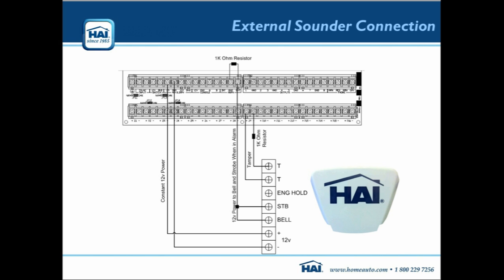The bell box itself offers a tamper on the cover when you lift it up, and also a tamper on the back if you rip it off the wall. We can wire that into one of our 16 zones on the main controller board. This requires 1k end-of-line resistance, and the bell box doesn't provide any resistance itself, so we need to use one of our 1k ohm resistors inside the bell box. That way, if someone cuts the wire, it will go from 1k ohms to infinite ohms and the HAI system will go into an alarm state.